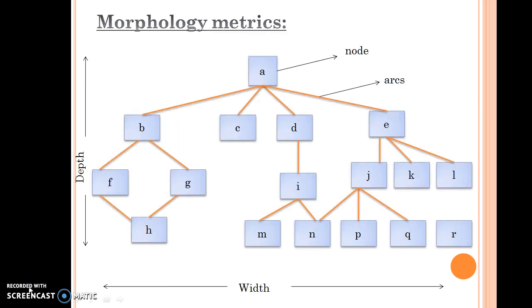Coming to the morphology metrics, the main purpose is to determine the number of modules and the number of interfaces between the modules. Here we can see in the diagram A, B, C, D, etc., these are the nodes and the arrows indicate the arcs. From the top node to the leaf nodes we call it depth, and the maximum number of nodes in a particular level is called width.